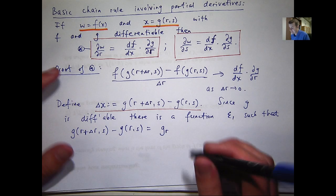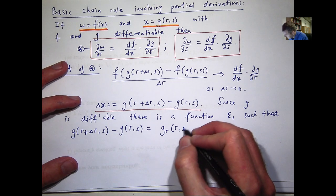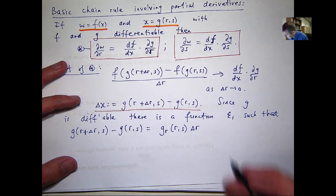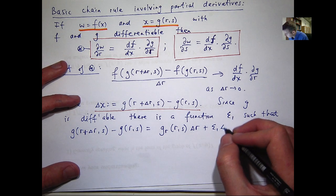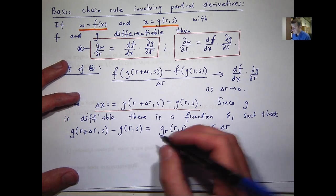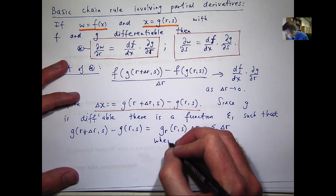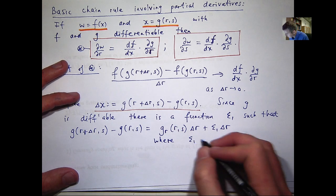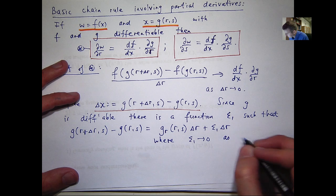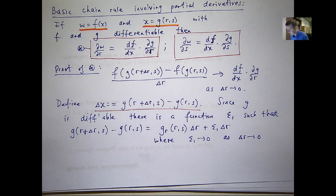The following difference is equal to partial derivative dg/dr times delta r plus epsilon 1 times delta r, where epsilon 1 approaches 0 as delta r approaches 0.